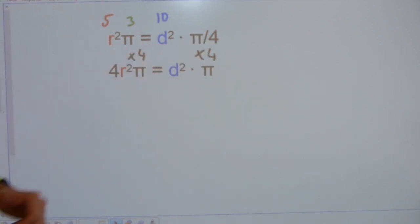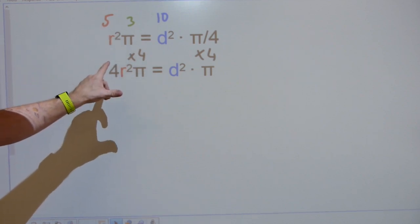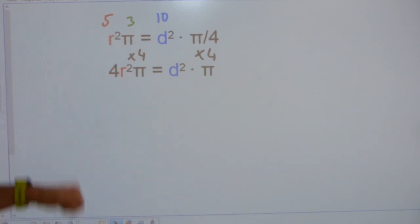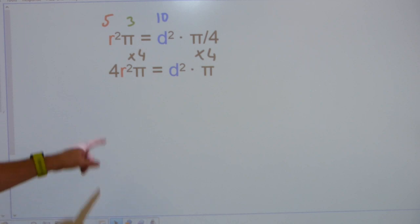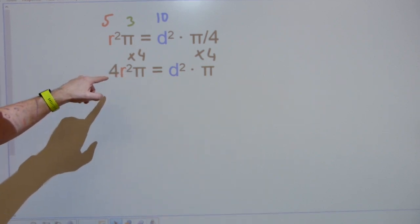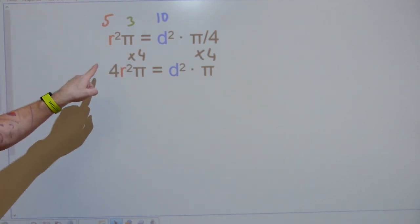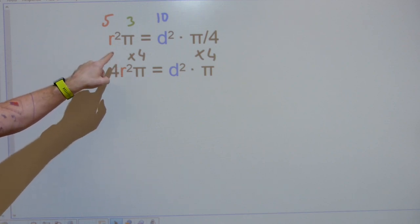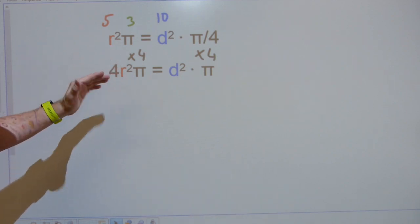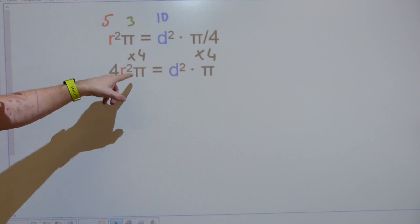When you multiply pi divided by 4 with 4, it is going to end up with pi. When you multiply this cited equation by 4, it is going to have one more number 4 here. Now, this can be, because this is a multiplication, and this is going to be important later, 4 times r times r times pi.